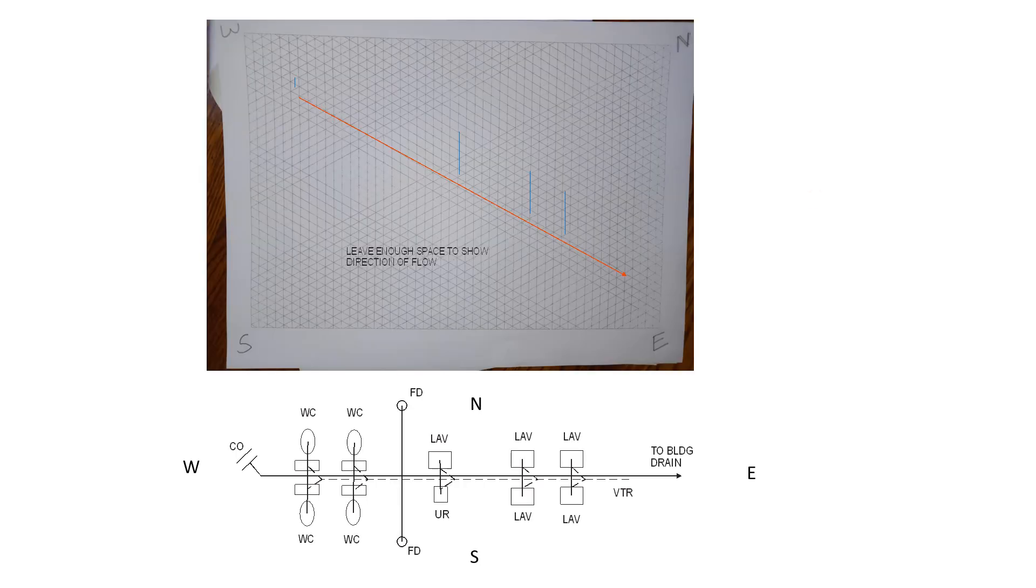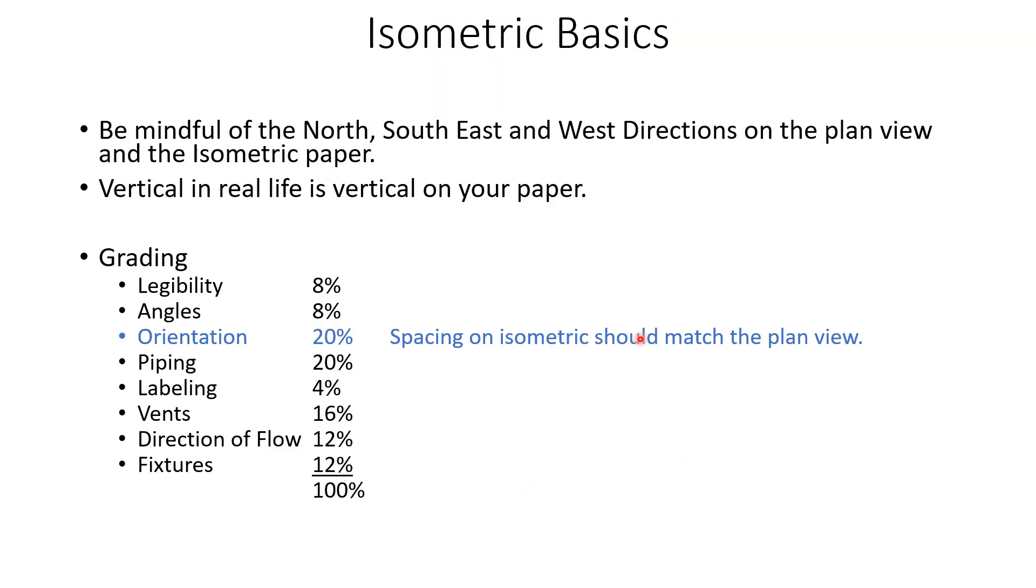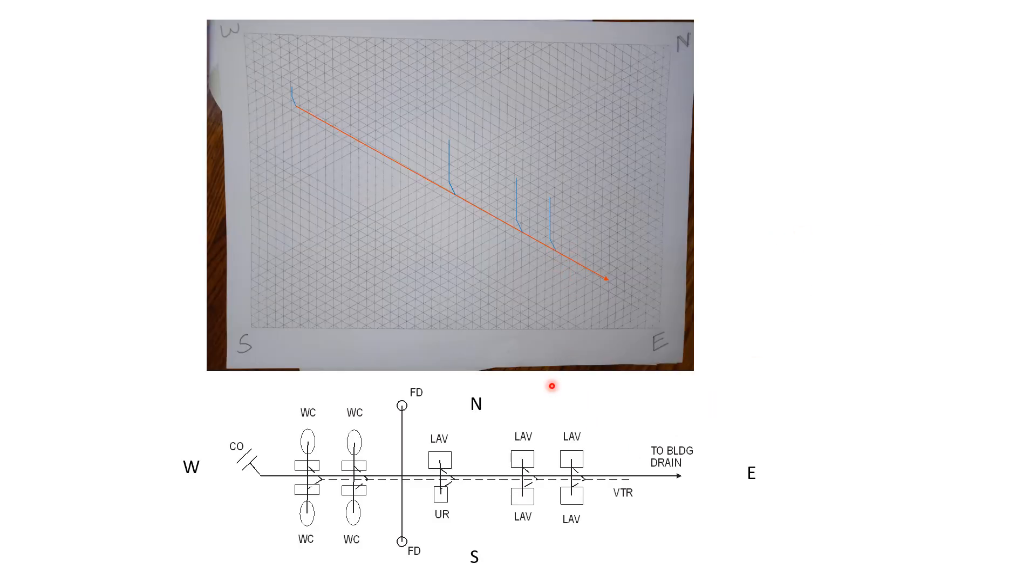The next thing we're going to look at is orientation. Your spacing on your isometric should match the plan view as far as your orientation is concerned. Let's take a look here. I've got two labs, two sets of labs here that are fairly close together so I show them fairly close together on the isometric paper. Then I've got a set that's a little bit further away here so I space that one out over there and then I leave plenty of room here for my other fixtures as well.